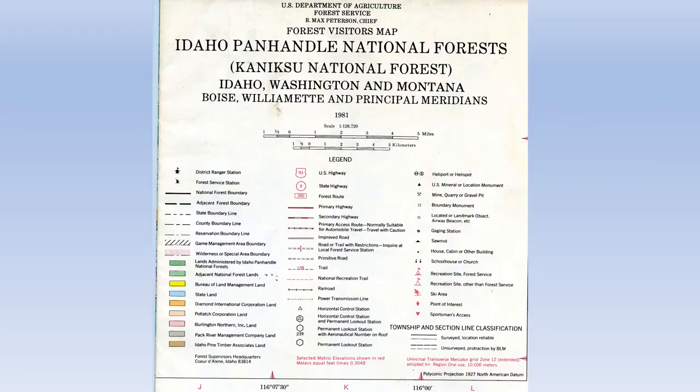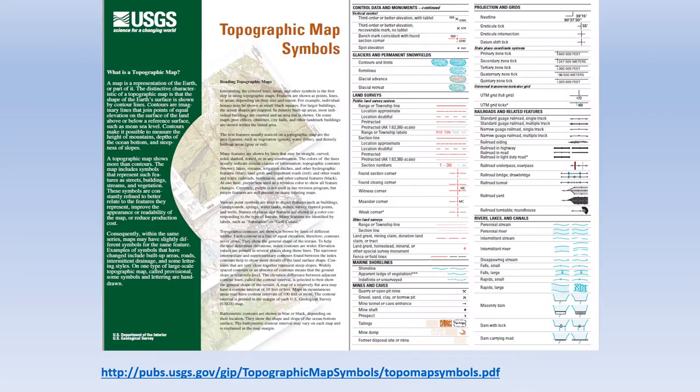Maps are created by assembling a set of map symbols, each associated with the feature the cartographer wants to include in the map. For every map there is a legend which defines symbols used in the map. This legend defines map symbols which are common to the great variety of maps used for search and rescue.